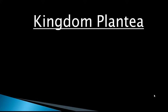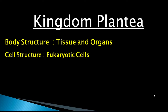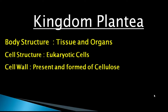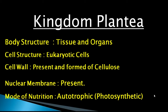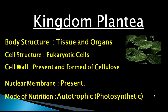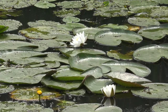Kingdom Plantae: body structure includes tissues and organs. Cell structure is eukaryotic. Cell wall is present and contains cellulose. Nuclear membrane is present. Mode of nutrition is autotrophic — specifically photosynthetic. Photosynthesis is the basic function in green plants, and all plants are classified under Kingdom Plantae.